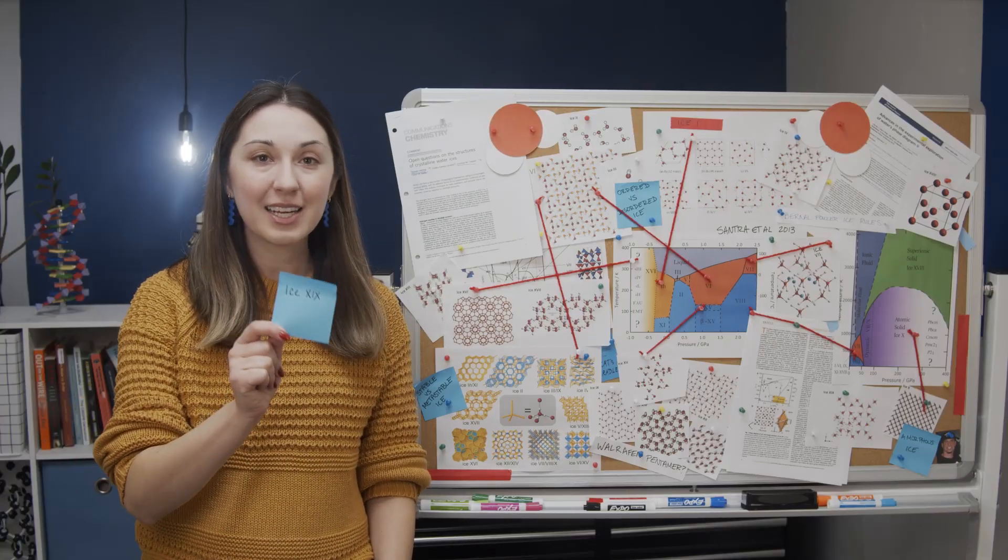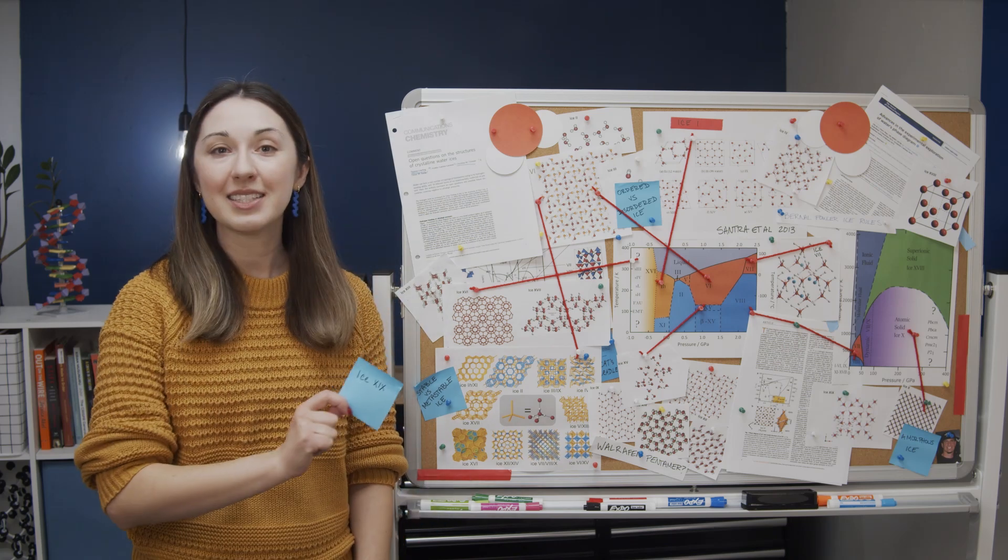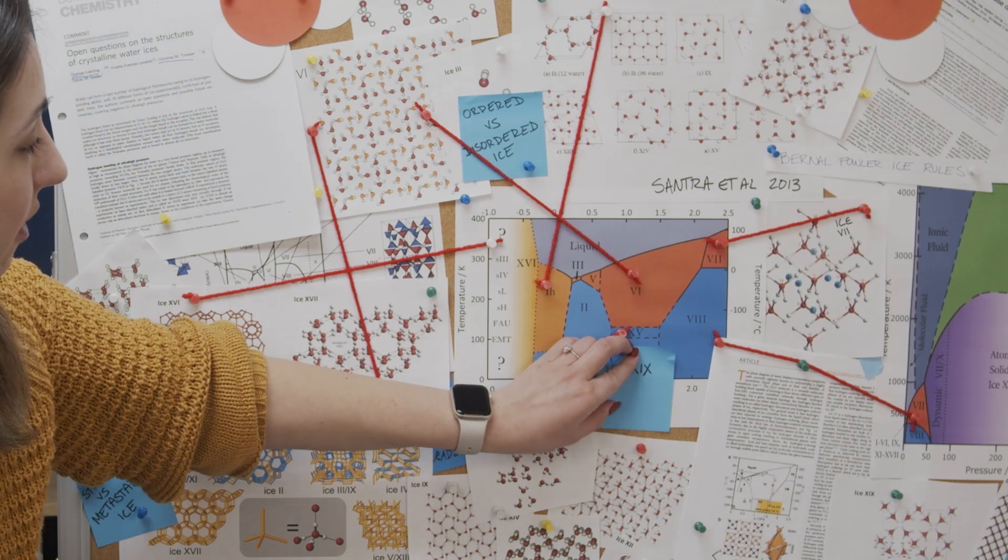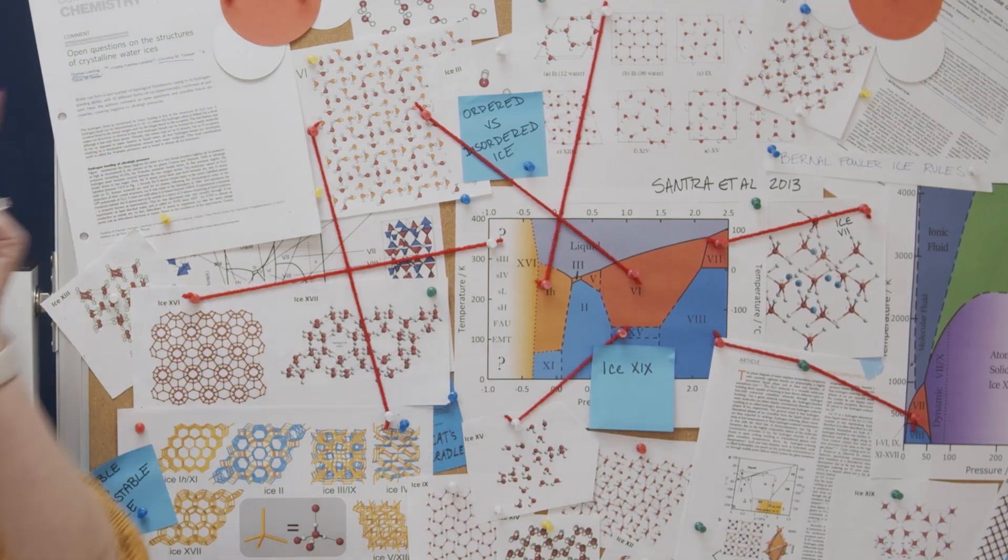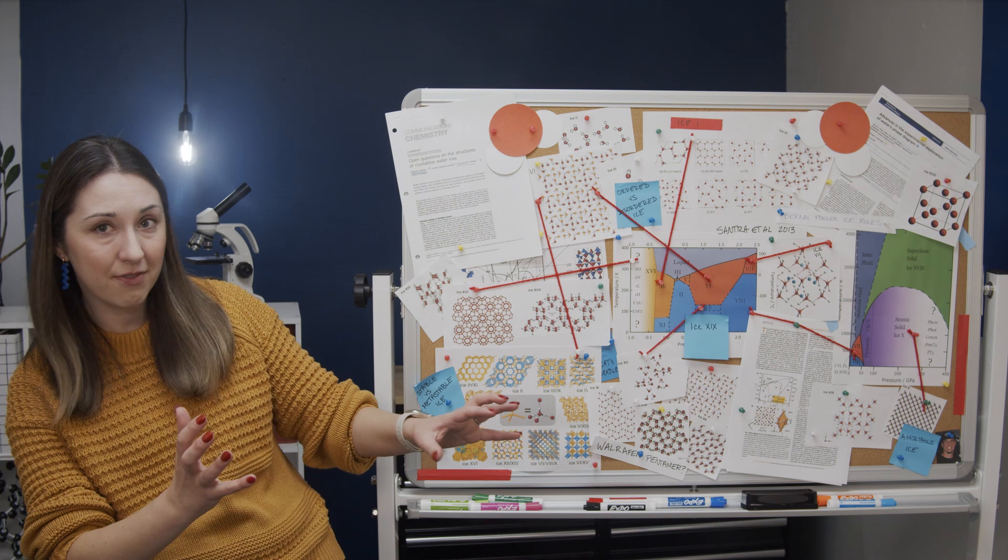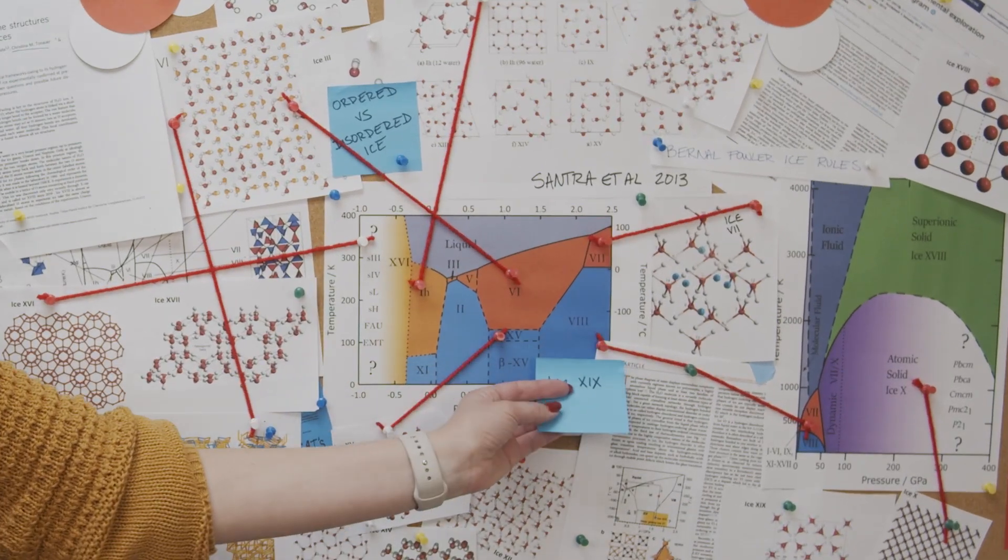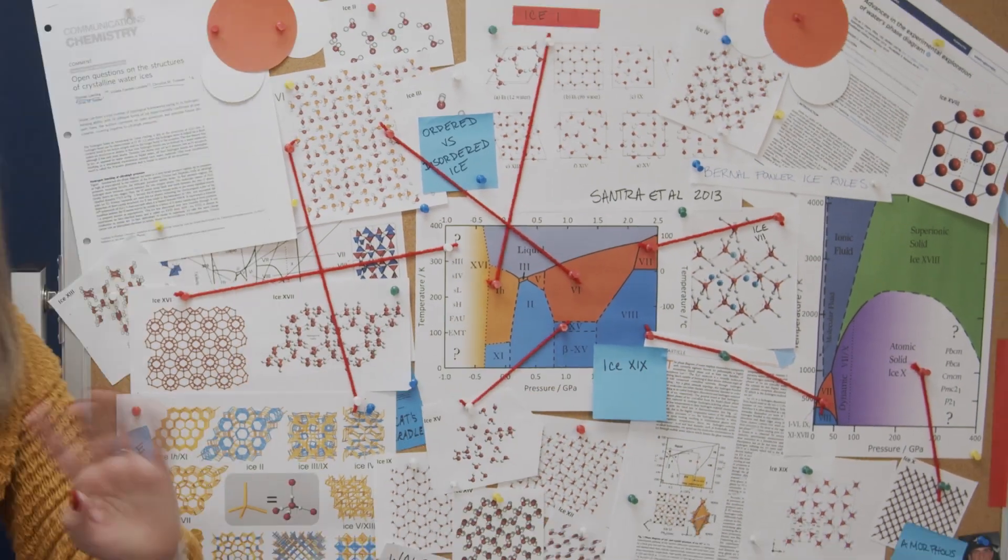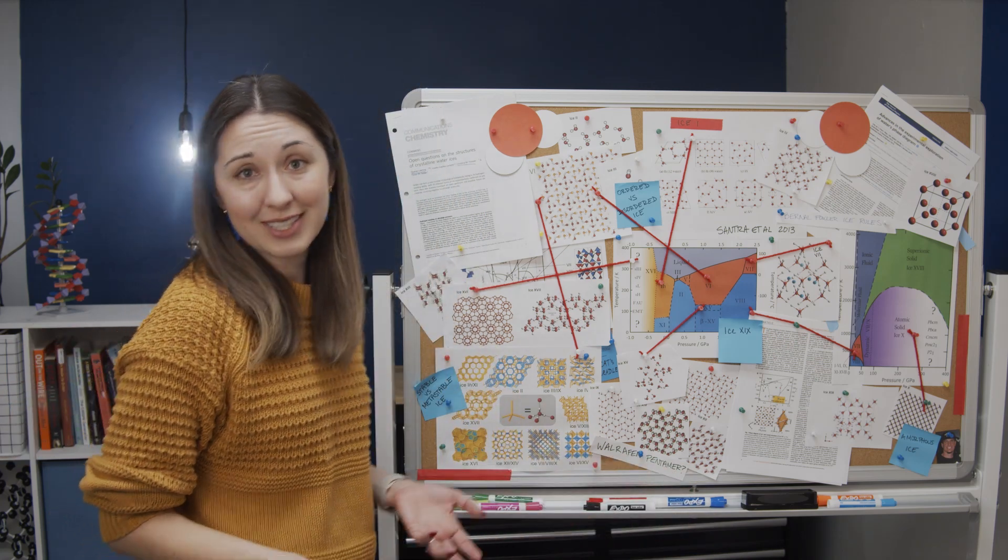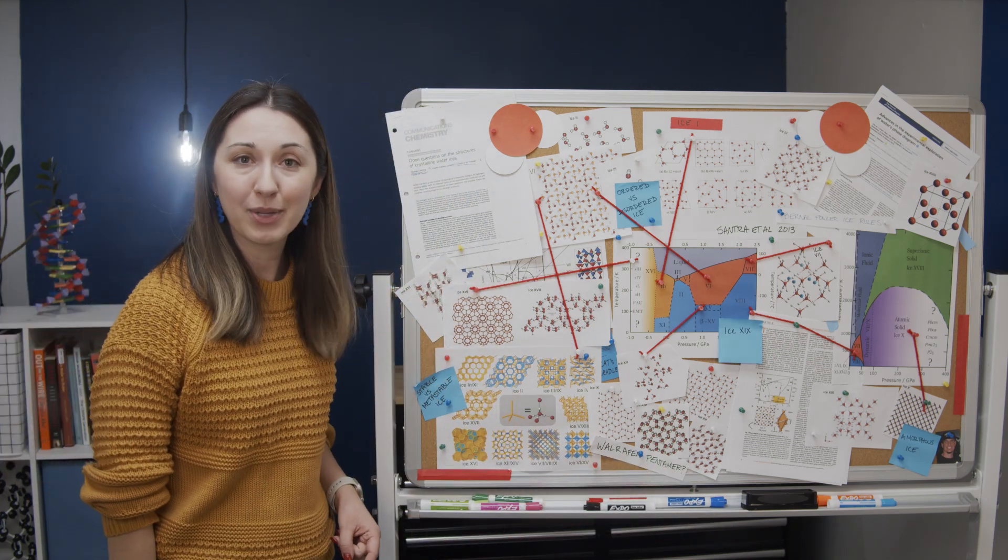One of the newest additions to the lineup is ice 19. Ice 19 was first described as an ordered form of ice 6 that used to be called ice beta 15. But newer work has shown that it may be better described as a distorted version of ice 6, and it might just form at higher pressure. There is ice controversy around where some of these boundaries lie. And I love that controversy means that science is happening.